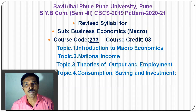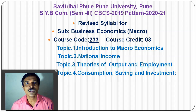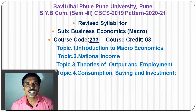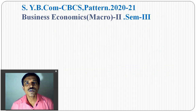Topic 3 is about the theory of employment. There are two main theories: the classical theory, explained by J.B. Say, Adam Smith, Marshall and others, and the modern theory explained by J.M. Keynes. Keynesian critiques of classical theory and critiques of Keynesian theory are also in Topic 3. Topic 4 is about consumption, saving, and investment.